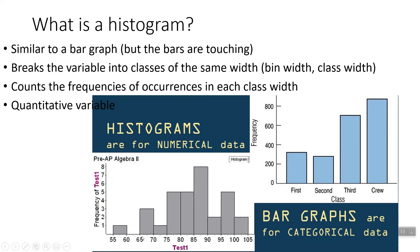A quick note: usually when we make these bins we include the first number, so 65 would be included in this count, but the last number — 70 here — would not be in this section; it would be in the next section. On the AP exam they will tell you which way to do it.